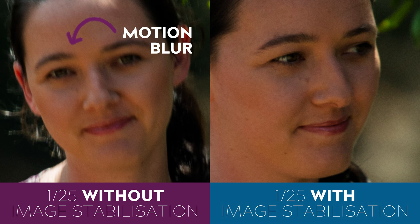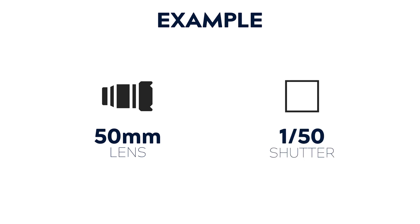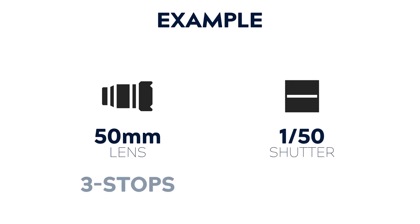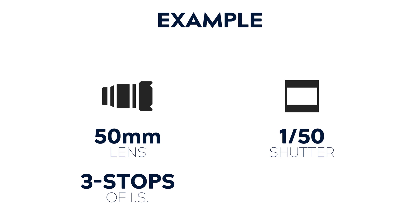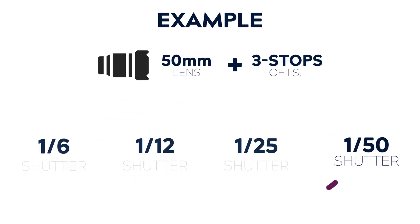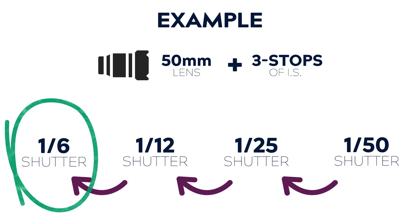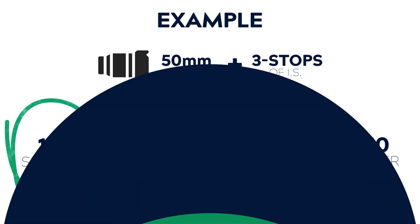Let's give you another example to really cement this. We've switched to a 50mm lens now, and we can shoot at 1/50th of a second. With the same three stops of image stabilization, this means we can now take that shake-free photo at 1/6th of a second, which is incredibly slow.